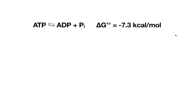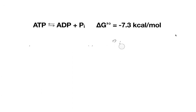You can see from its delta G naught prime that ATP hydrolysis — ATP plus water gives you ADP plus inorganic phosphate — the water is considered constant because of its 55.5 molar concentration so we ignore it and think about it as just ATP going to ADP plus PI. But it is a hydrolysis reaction, and it's an energetically favorable one. Under standard state conditions, it has a delta G naught prime of minus 7.3 kcal per mole — minus means favorable.